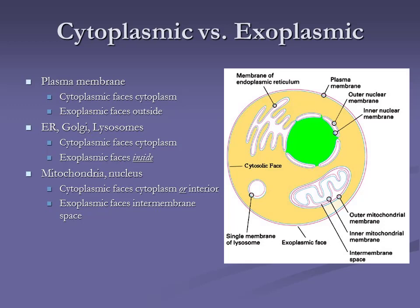We have the same with our ER, Golgi, and lysosomes because they have one lipid bilayer. In this case, the cytoplasmic face is facing the cytoplasm, but the exoplasmic face faces the inside of that particular organelle. So the blue is always adjacent to the cytoplasm, but the pink — the exoplasmic — is facing inside the ER, inside the lysosome, or inside the Golgi.